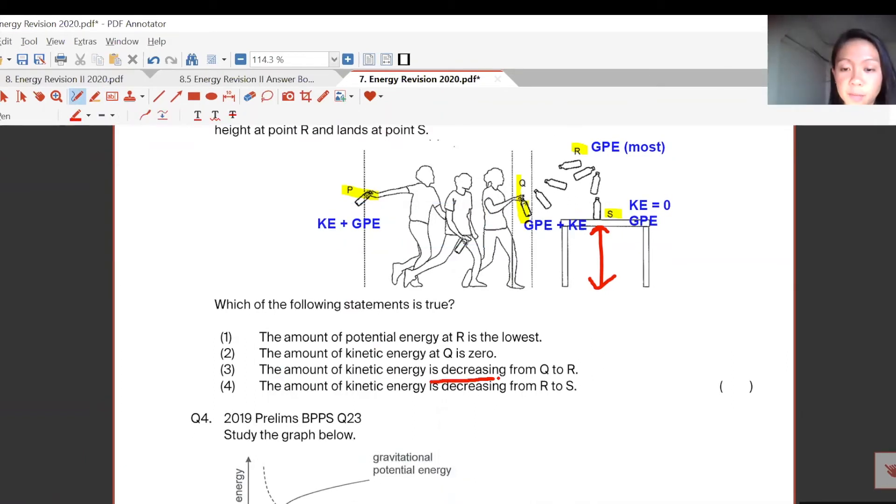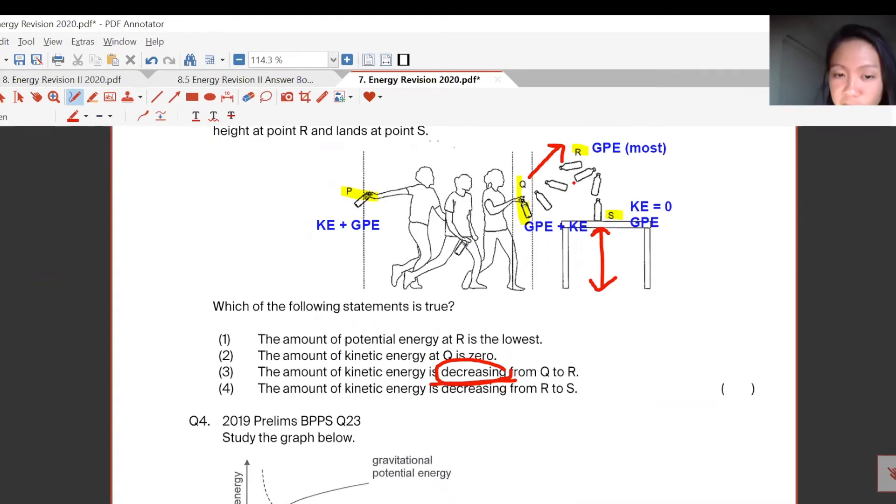The amount of kinetic energy is decreasing from Q to R. If he swings it upwards, GPE... Okay wait a minute, let me look at this first. Kinetic energy is decreasing from R to S. Yes, because after that, kinetic energy becomes zero.